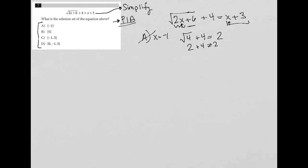We just do the same thing for all of these options. Choice B says that x is equal to 5. So again, 2 times 5 is 10, plus 6 is 16. So I'd have the square root of 16 plus 4 equals 5, replacing x with 5 there. So 5 plus 3 is 8. The square root of 16 is 4. 4 plus 4 does, in fact, equal 8. So B is a good answer.